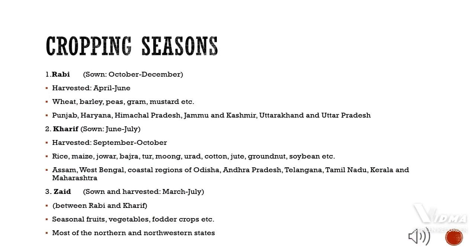Cropping seasons. Rabi: Sown October to December, harvested April to June. Crops include wheat, barley, peas, gram, mustard, etc. Major states: Punjab, Haryana, Himachal Pradesh, Jammu and Kashmir, Uttarakhand, and Uttar Pradesh.